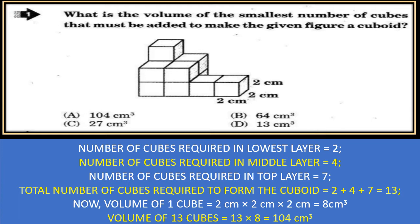Volume of one cube is length × width × height, which is given as 2 cm × 2 cm × 2 cm, equals 8 cubic centimeters. So the volume of 13 cubes is 13 × 8 = 104 cubic centimeters. That is the correct option.